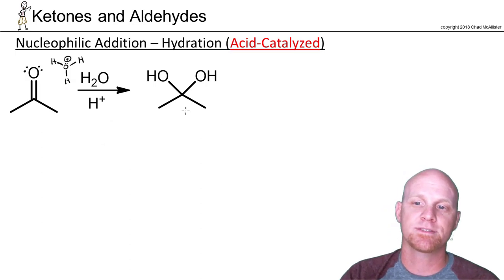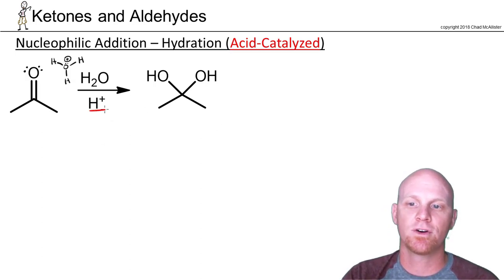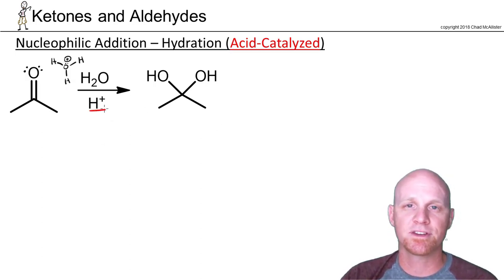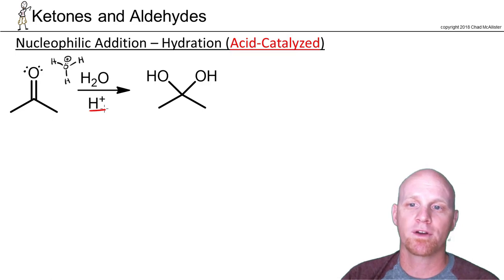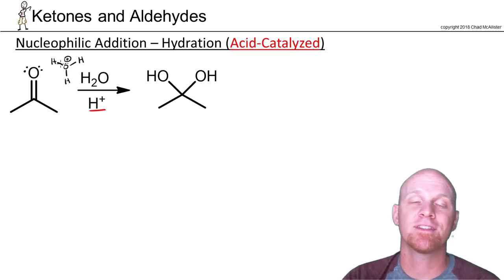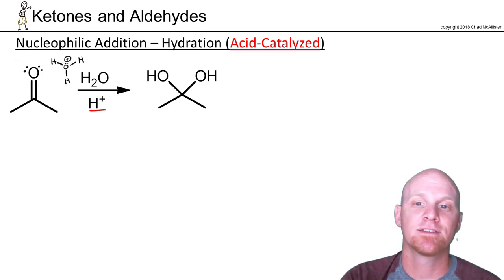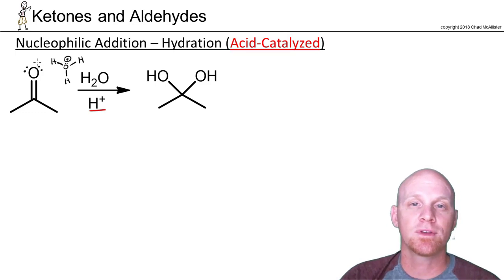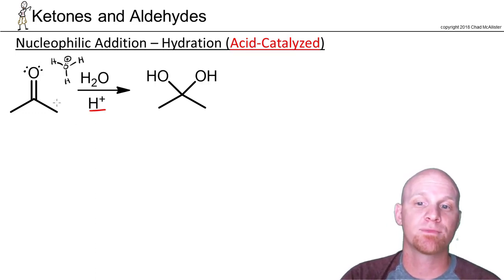So in the acid-catalyzed mechanism, we're going to add some source of H+, some acid, along with the water. When they mix, they'll form H3O+, and that's actually what acts as the acid in step one here. So instead of nucleophilic attack followed by protonation, we'll actually do the protonation first.